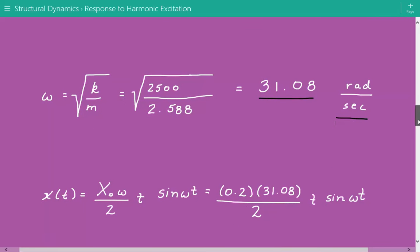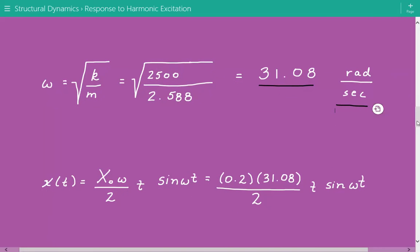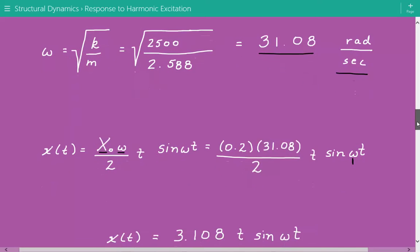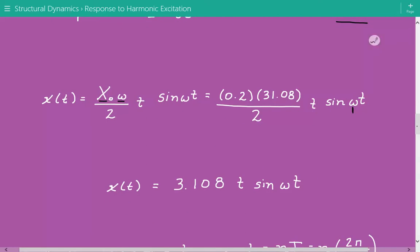Now let's simplify our mathematical expression and plug in the numbers. We know x sub o and the circular natural frequency. It's 0.2 times 31.08 divided by 2 times t times sine of omega t. Here in this omega, I didn't input the value of 31.08 right now, and you'll see why in a bit. I just left it in symbolic form. So now we have 3.108 times t times sine of omega t.